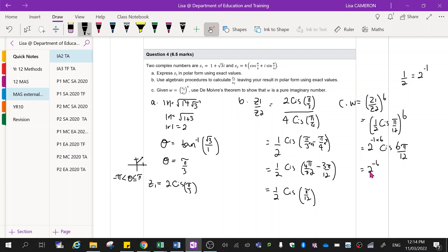That's going to leave me with 2 to the power of negative 6, cis pi on 12. Now we're going to break it down to see if we're only left with an imaginary number.